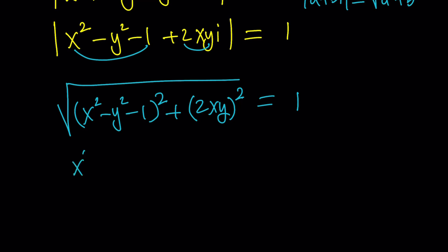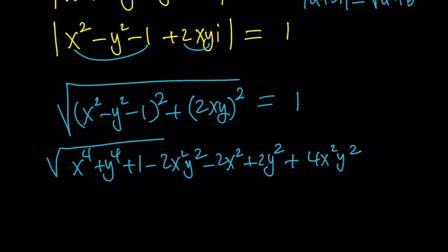I'm just going to square this x to the fourth plus y to the fourth plus one. Remember a plus b plus c squared minus two x squared y squared and then minus two x squared plus two y squared. And then that's it. There should be six terms plus four x squared y squared. Interesting. And the whole thing is one.